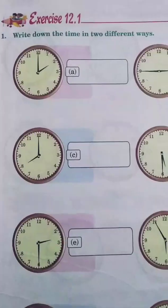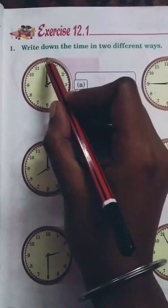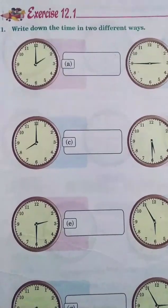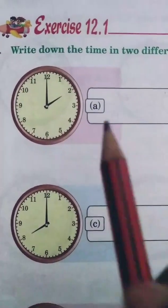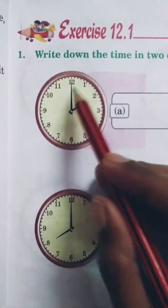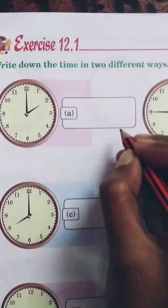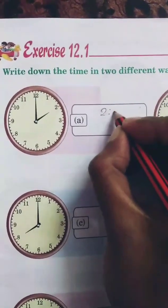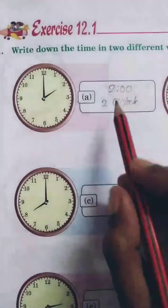Now let's see the exercise questions. Question 1: Write down the time in two different ways. Question A: the hour hand is at 2 and the minute hand is at 12, so the time is 2 o'clock. First way: write 2:00. Second way: write '2 o'clock.'